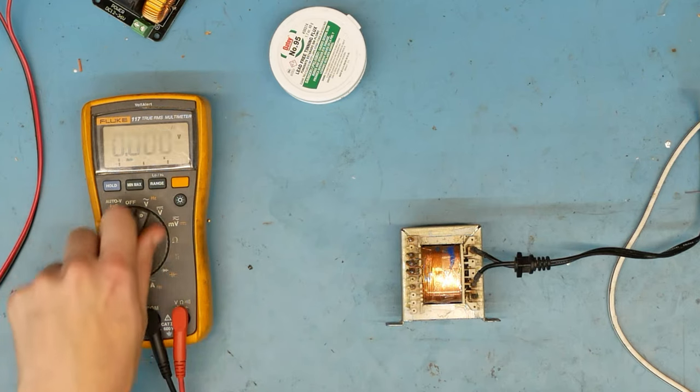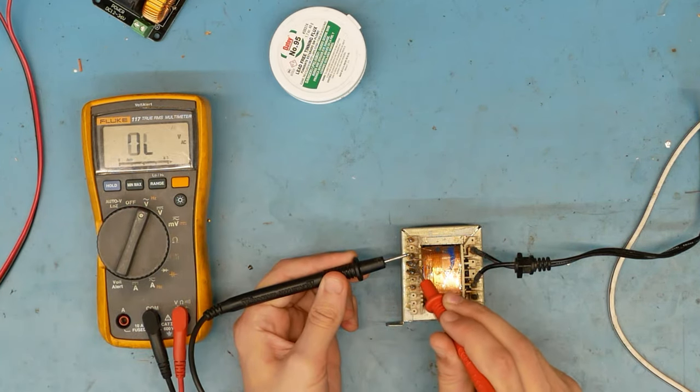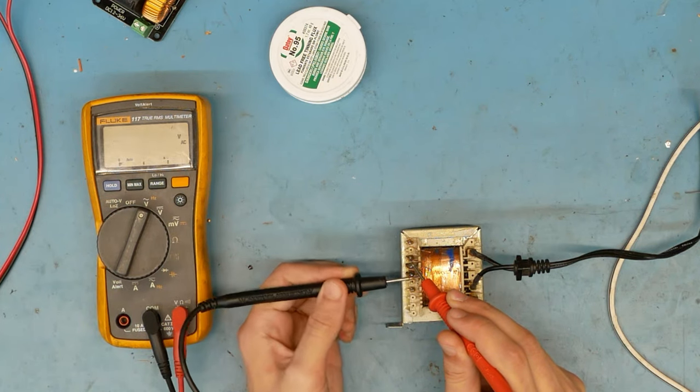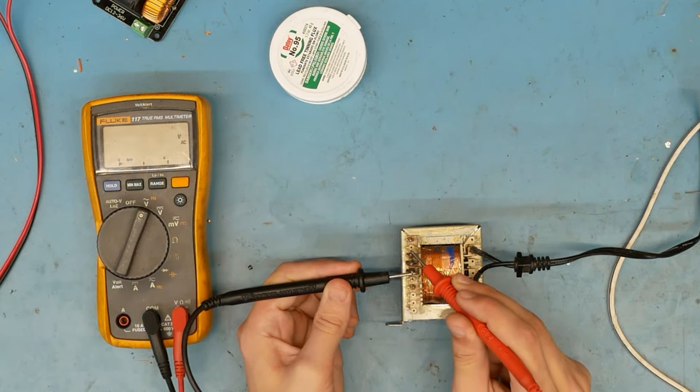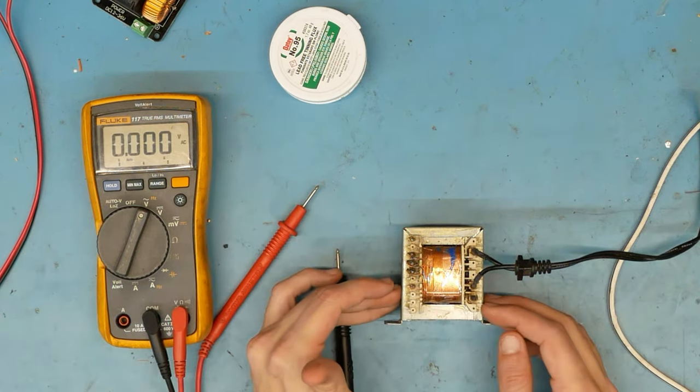We take a multimeter here, put it on to the AC range, and measure the voltage on these taps. We get about 16 volts, 16.2 volts there, and across the taps we get 32 volts. So this is clearly a 15 volt transformer.